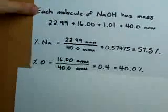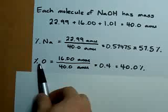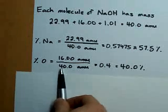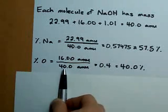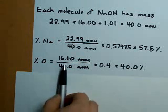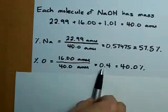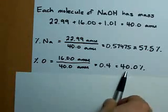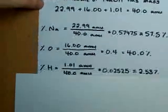We do the same for oxygen. Oxygen accounts for 16 of the 40 atomic mass units in sodium hydroxide. Putting that into a calculator gives you 0.4, which is 40%.